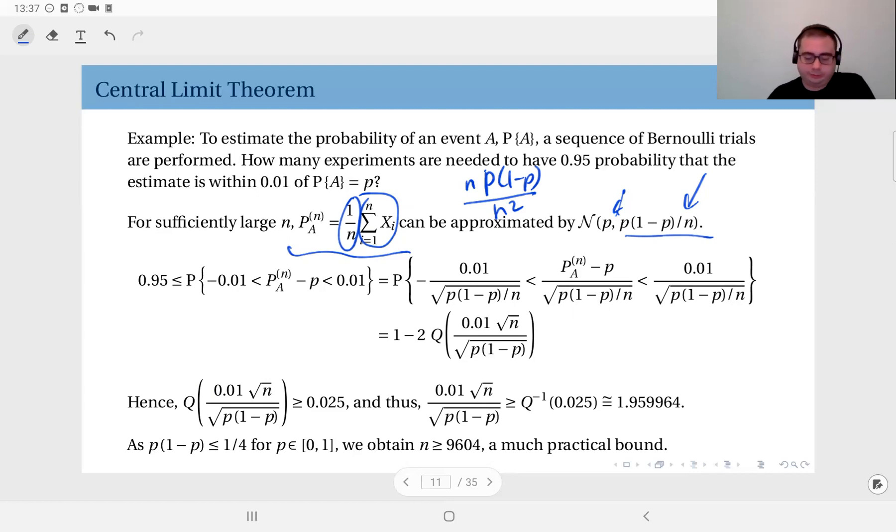Now that we have this, we can write this probability. The probability or the difference between the probability estimate and the true probability is bounded by 0.01 in absolute value. We would like this probability to exceed 0.95.